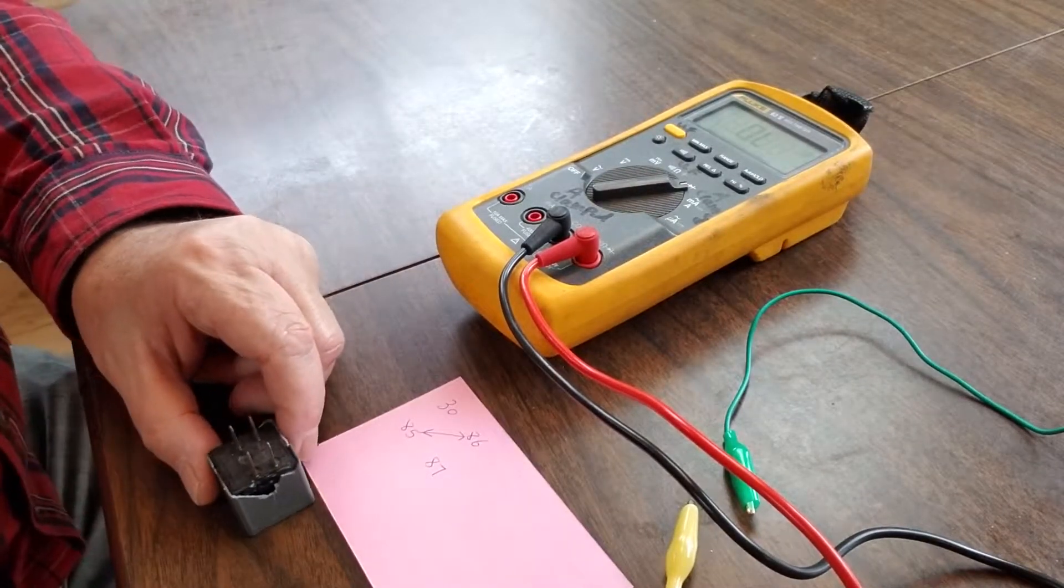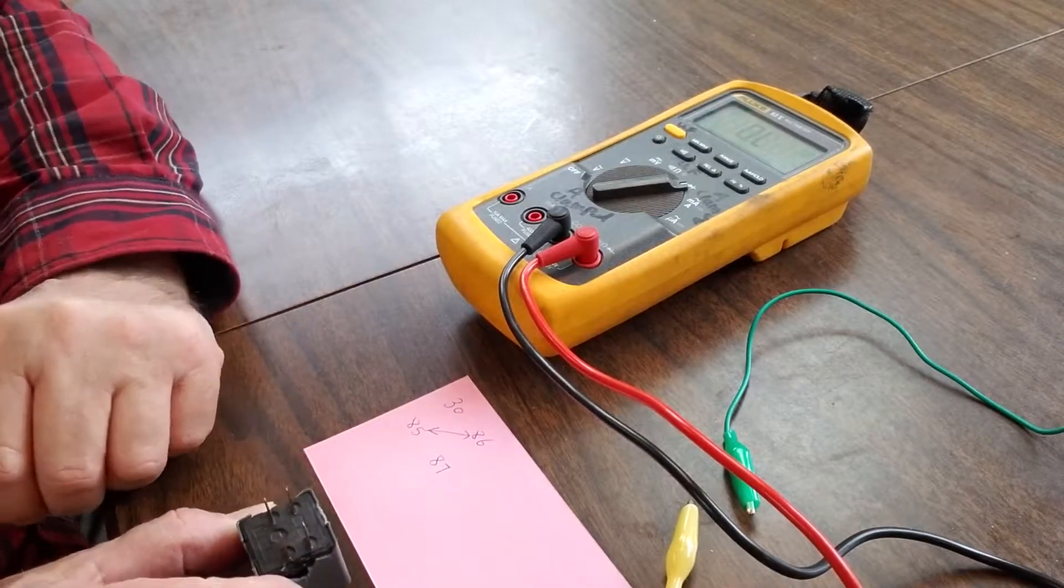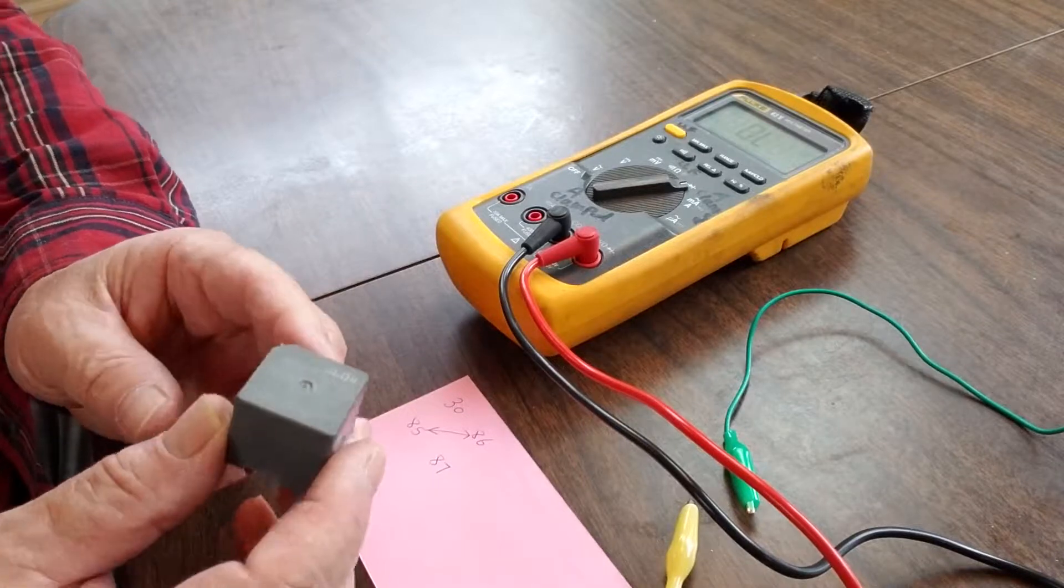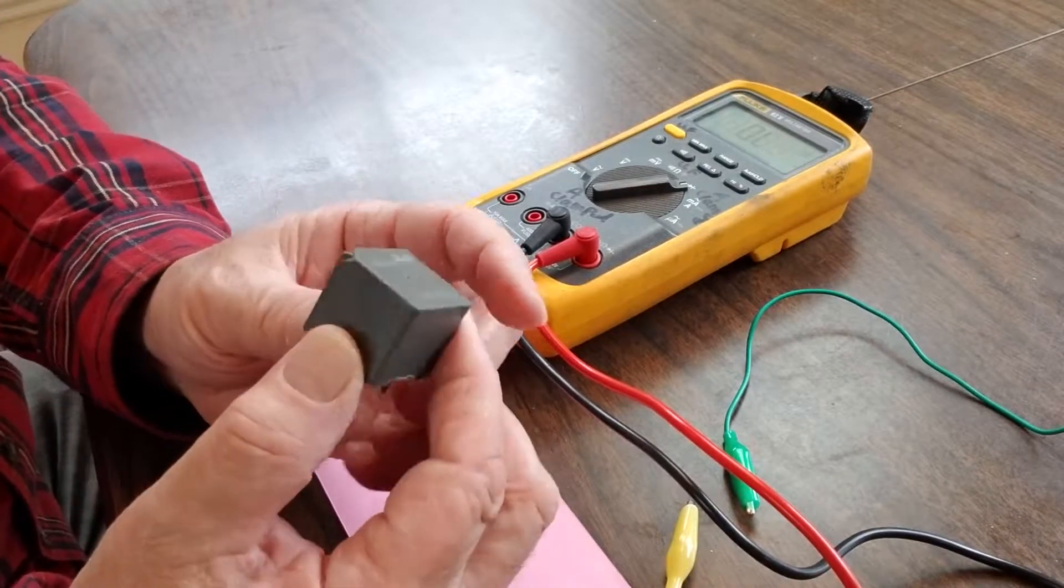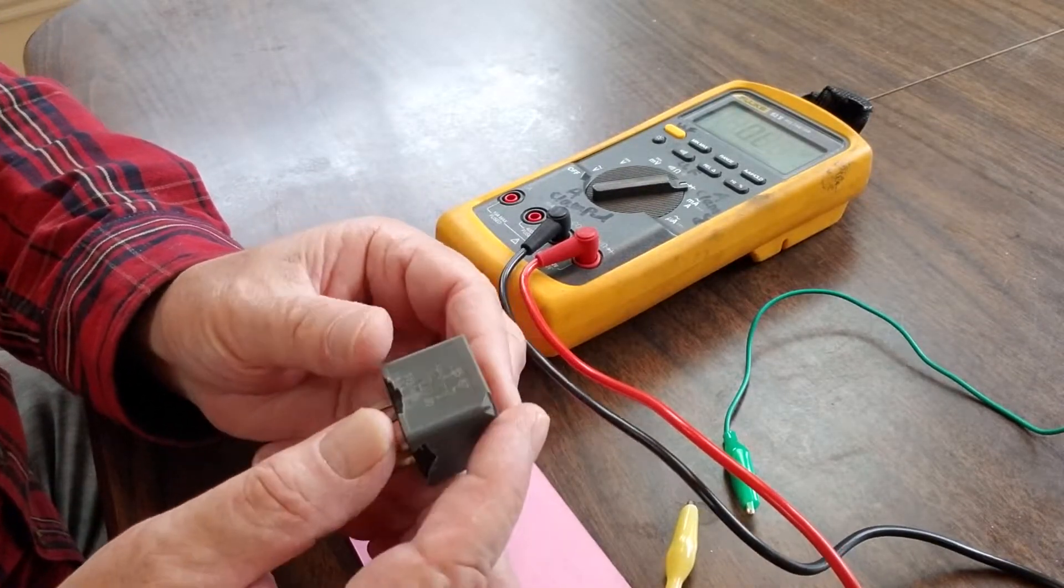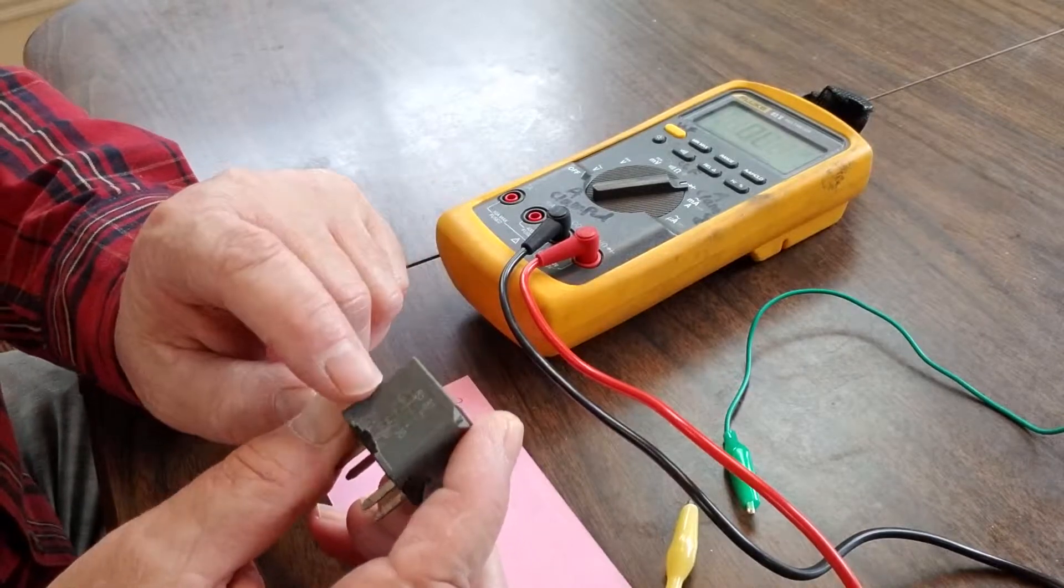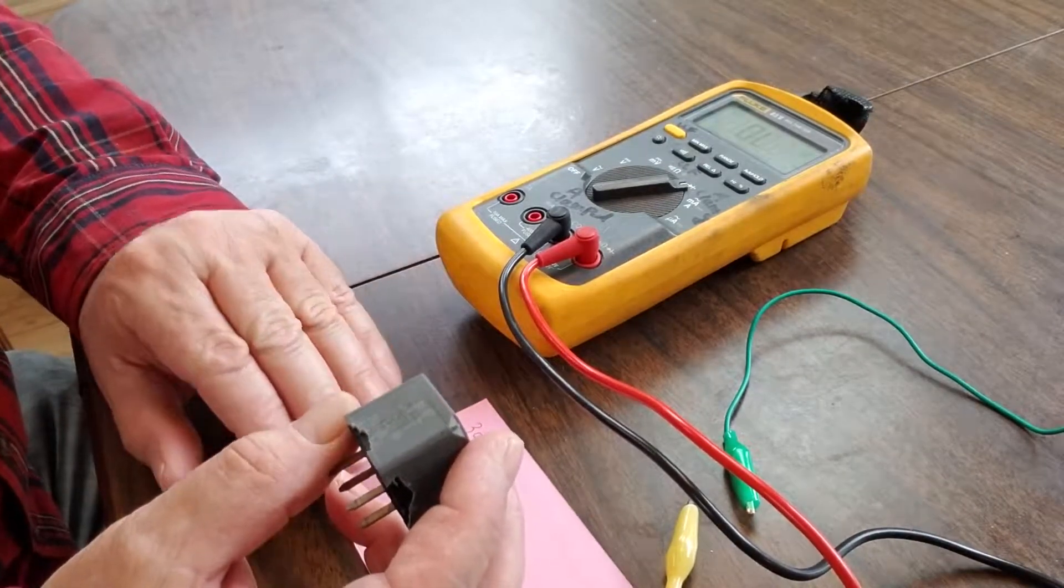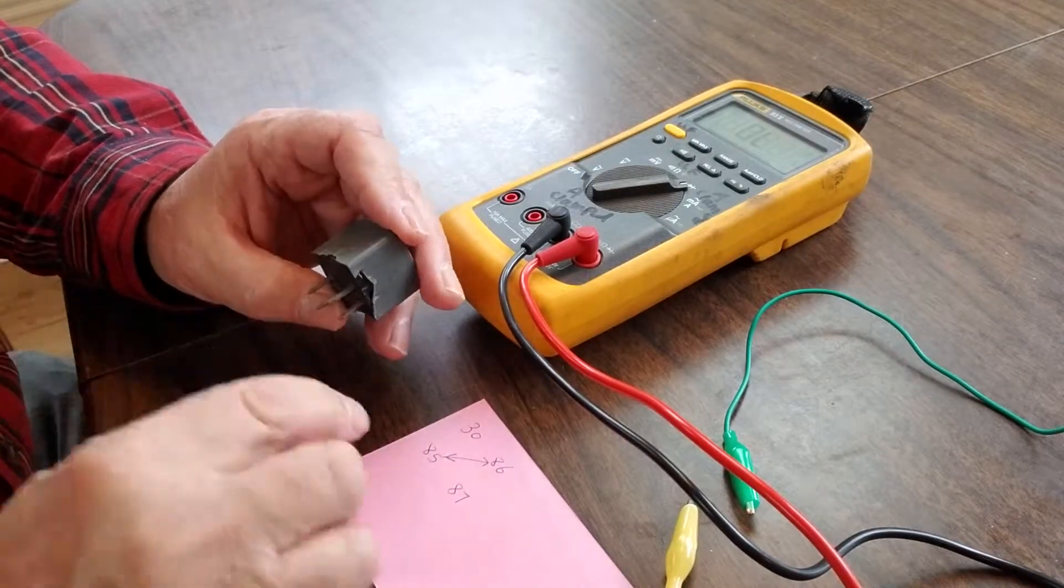Hello everyone, I'm going to make a quick demonstration of how to check your auto relays. They normally have a diagram right here, but to make this simple, I just drew it. They have four numbers: 30, 85, 86, and 87.